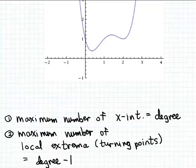Also, the maximum number of local extrema or turning points for a polynomial function is the same as the degree of the function minus one.